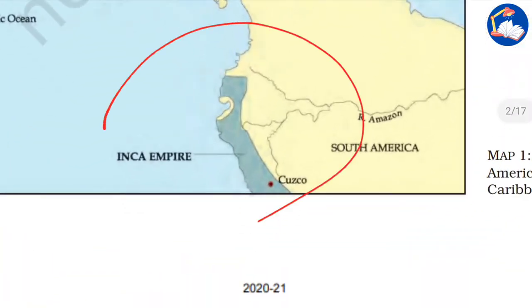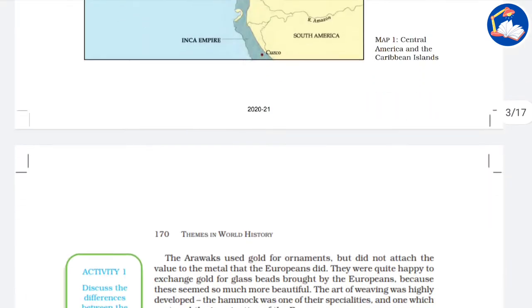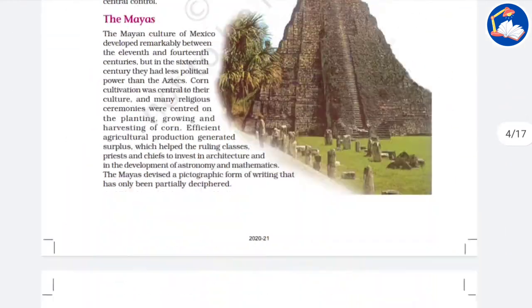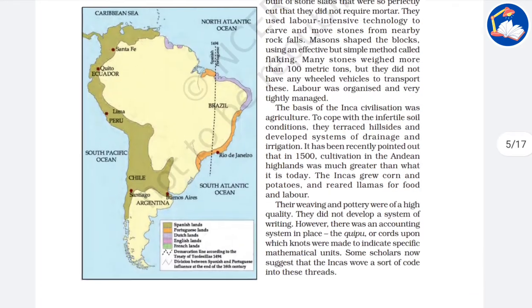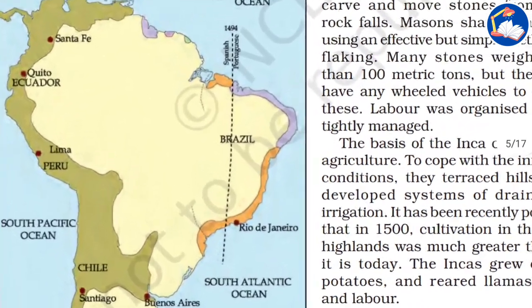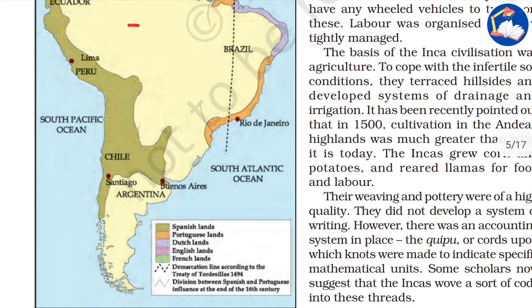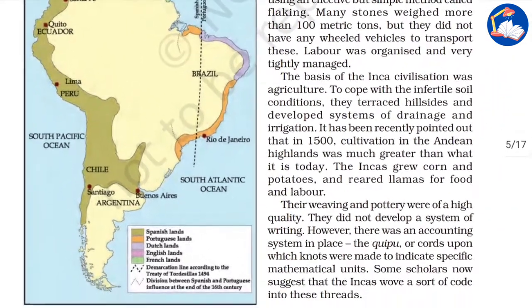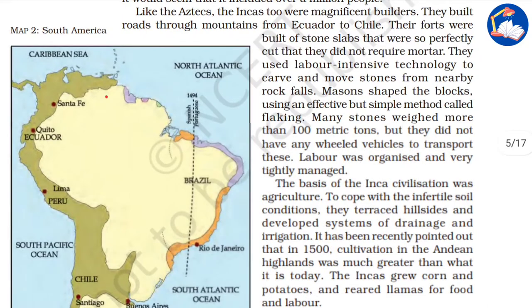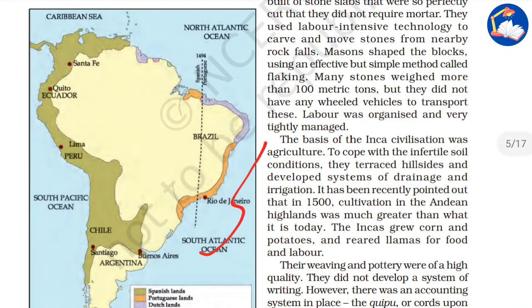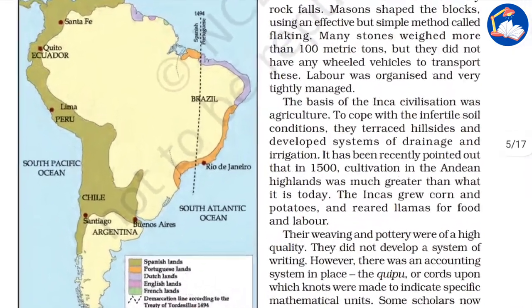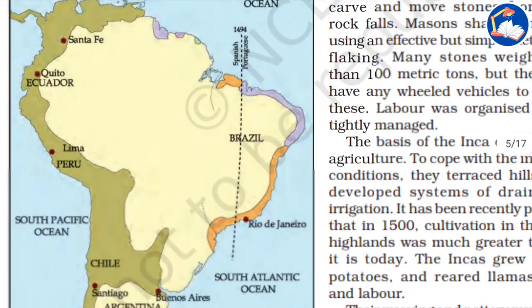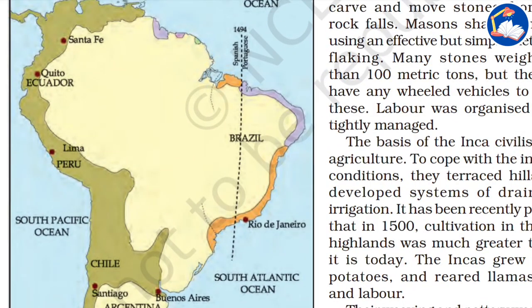The Inca Empire is shown here on the map, mainly in the Peru region. Now looking at how the Europeans started colonizing: these are the Spanish lands, here we have the Dutch in violet, and the Portuguese in orange. All these places were dominated by European powers, and this small area belonged to the French.